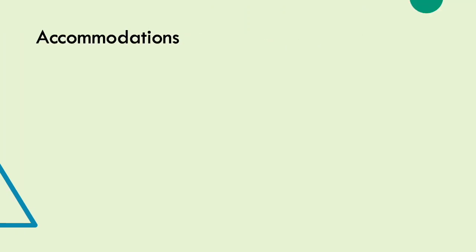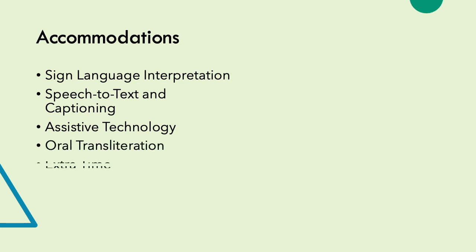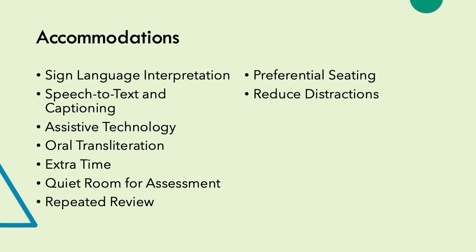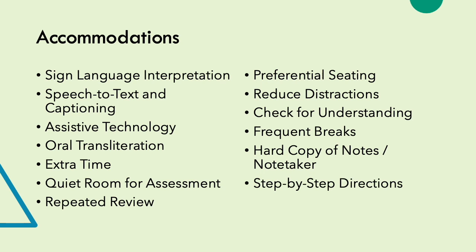Let's look at a few accommodations for students with hearing impairments. You could use sign language interpretation, speech-to-text and captioning on videos, assistive technology, oral transliteration, extra time, a quiet room for assessment, and repeated review. We could also determine the best seat for the student in the classroom, reduce distractions, check for understanding, allow frequent breaks, provide a hard copy of notes or a note-taker in class, and use step-by-step directions. Note that accommodations do not change the criteria of the assignment, but they do help with the presentation.